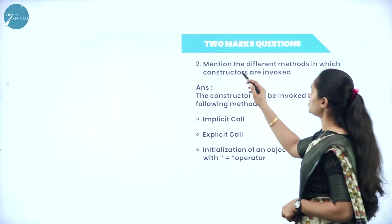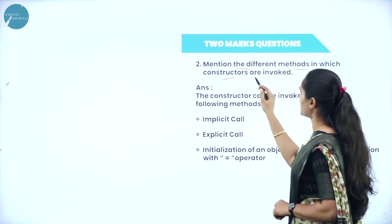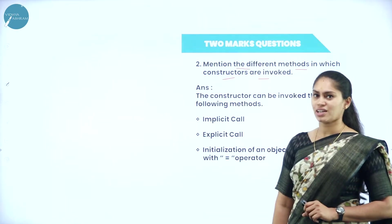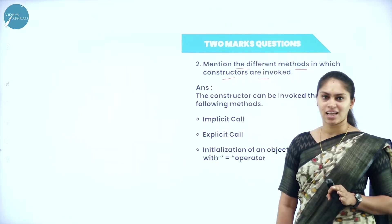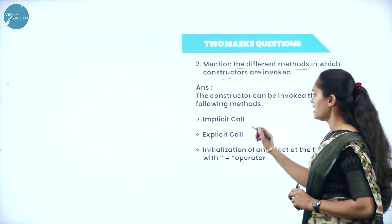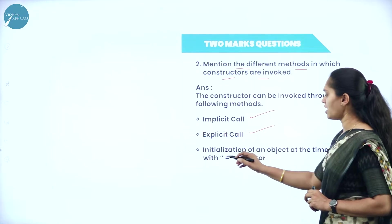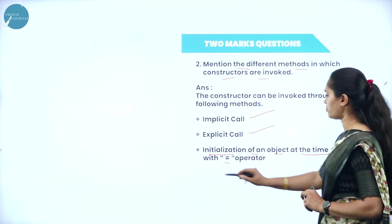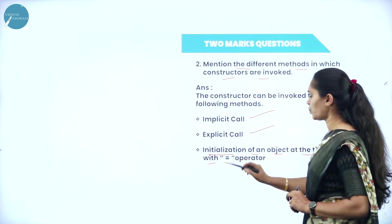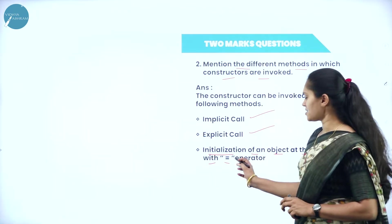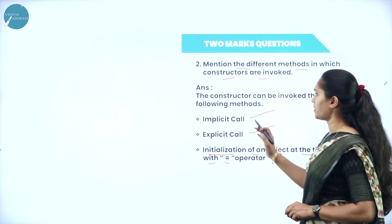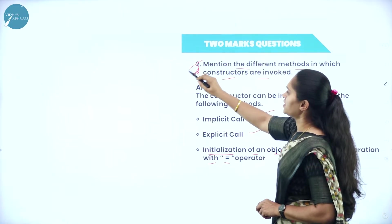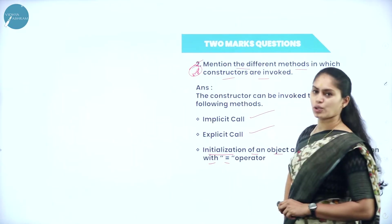Next, mention the different methods in which constructors are invoked. How are we going to invoke the constructor? It will be by three types: one is implicit call, explicit call, and initialization of an object at the time of declaration with equal operator — that is the assignment operator. This is a most frequently asked question; consider this an important question.